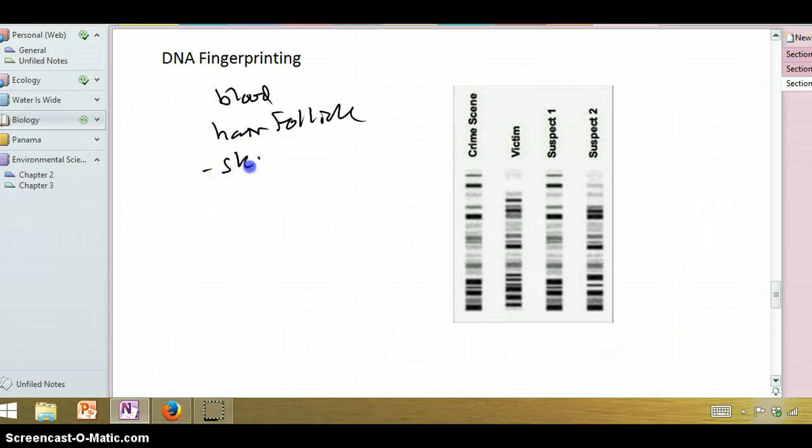It could come from skin cells. For example, if a person scratches somebody else, they can have the other person's skin underneath their nails. If it's a rape in particular, it can come from the semen that is left behind by that individual. You can get DNA from any of these sources.